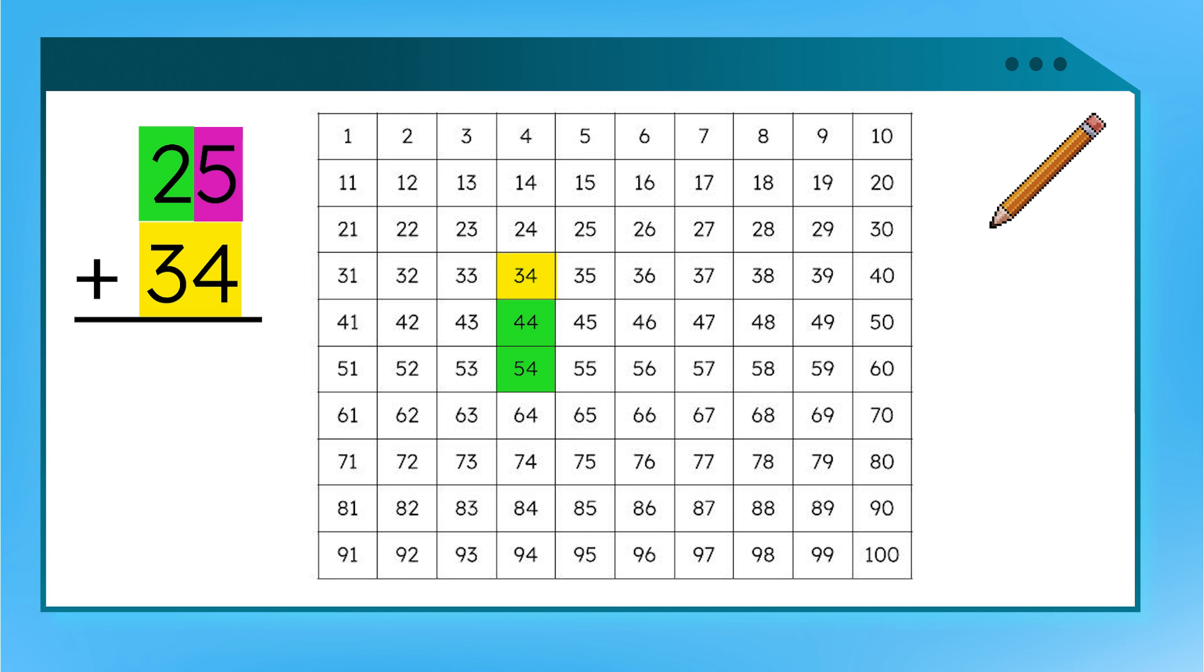To add 1s, we move across to the right. Since we have 5 1s, let's move right 5 spaces. 1, 2, 3, 4, 5. And where do we land? That's right! Our answer is 59. Using a hundred chart helps us add by breaking numbers into 10s and 1s and making quick jumps instead of counting one by one.